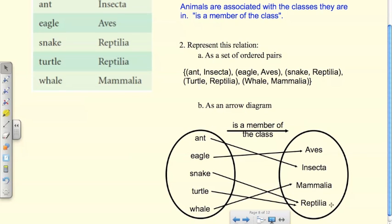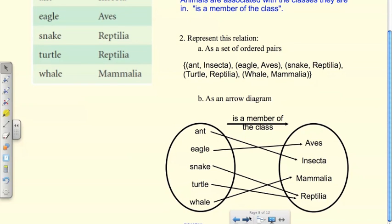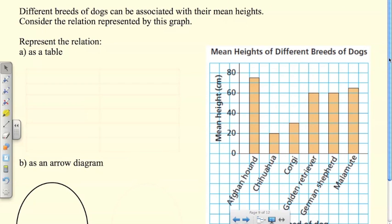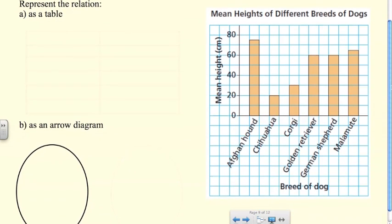It's important to make sure that we have them in the right order. It makes sense that ant is a member of the class Insecta and not the other way around. We can't say Insecta is a member of the class ant.